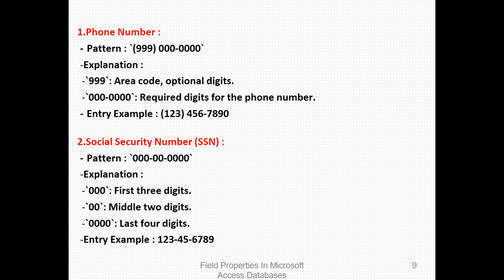We have an example here so you can understand. Look at this pattern: 999-000-0000. The explanation is that the first three nines are optional, that is the area code, so you can put it or skip it. Then the last part requires digits for the phone number. For example, 123 here is the area code of a country like 254 for Kenya. It's not a must you put it, you can leave it blank then write the other numbers.